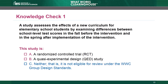The answer is C. The study is ineligible for review under the WWC group design standards. There is only one group in the study — the study examines scores of the group in the fall and the scores of the same group in the spring. Without a comparison group, we worry that normal maturation in the students might affect the results. We can't tell whether the intervention is truly causing students' test scores to improve or students are just learning more as they get older. Choice A is incorrect because there was no random assignment. Choice B is incorrect because eligible QEDs require at least two distinct groups.